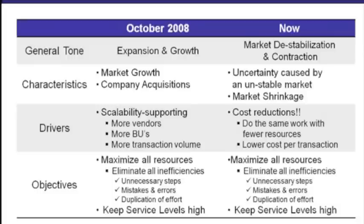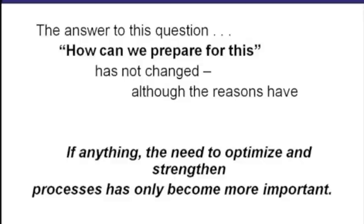If there's going to be less work for people to do, we need to maximize the people remaining in the organization to get that done. These objectives are still the same: maximize all resources, eliminate all inefficiencies, but still keep service levels high. Now more than ever, we cannot afford to lose a current customer. We can only afford a fraction of the people on board, so we need to make sure they have the tools to get their work done accurately, quickly, and with that same high level of service. Process control and using technology to further automate those processes is really the true driver here.